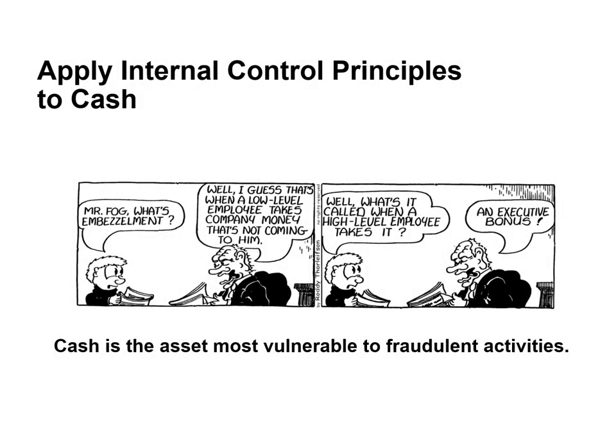Cash is the asset most vulnerable to fraudulent activities. To safeguard cash and to ensure the accuracy of the accounting records for cash, effective internal control over cash is critical. We will briefly discuss the six principles of control activities as they relate to both cash receipts and cash disbursements.